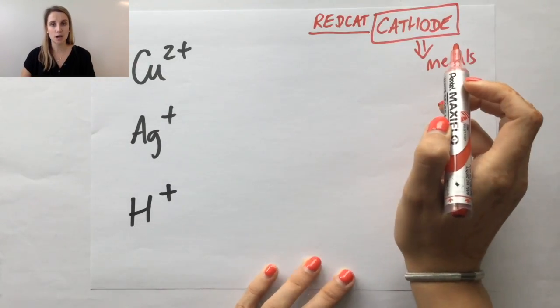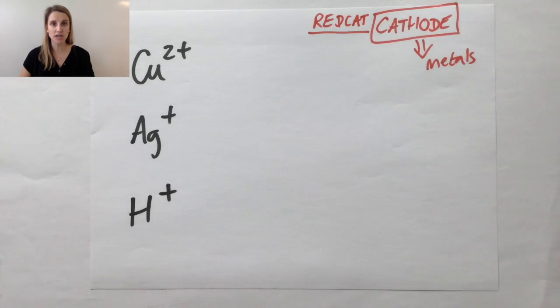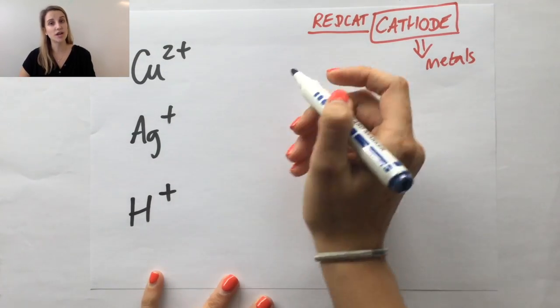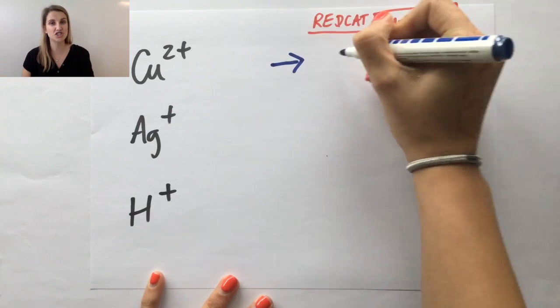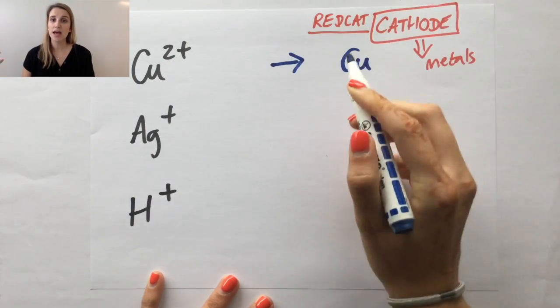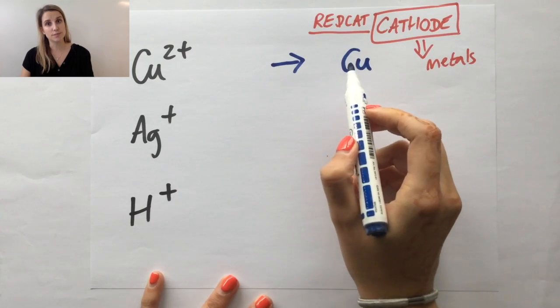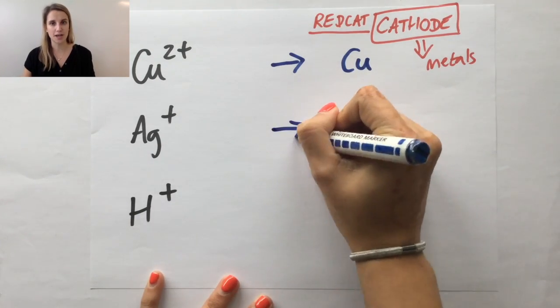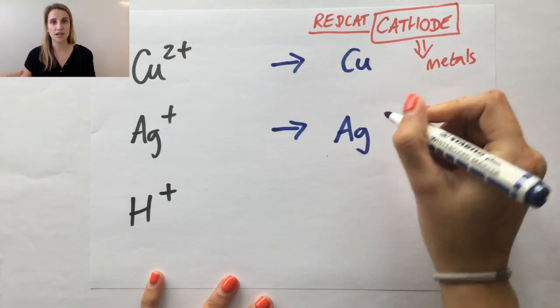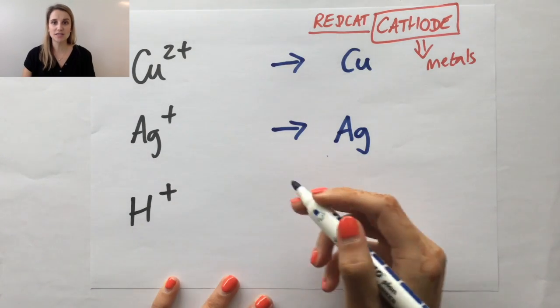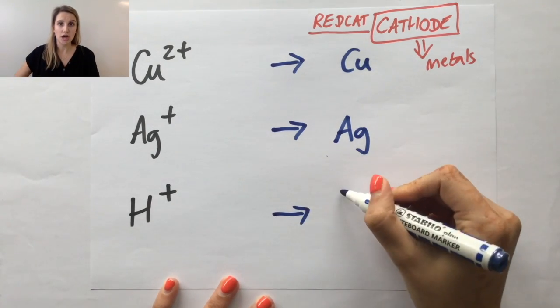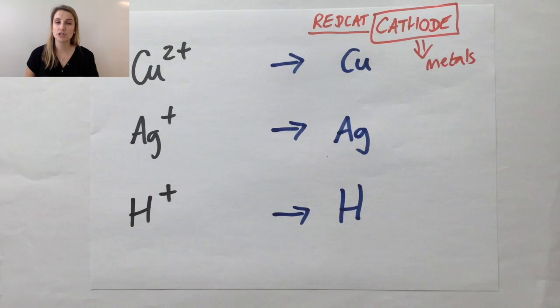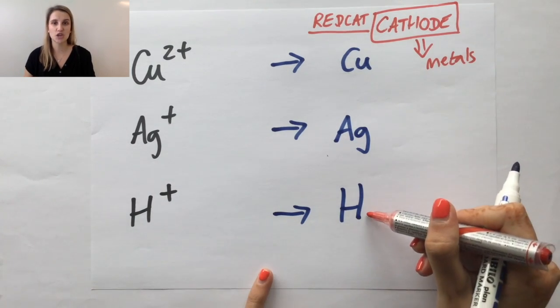Let's have a look through these examples and try to predict the products that are going to be made here. So Cu²⁺ will turn into its metallic form, which is just copper, Cu. Ag⁺ will turn into its metallic form, which is just Ag. And H⁺ will turn into hydrogen gas, which has the formula H₂. Don't forget the hydrogen is diatomic, so you need to add that little 2 there.